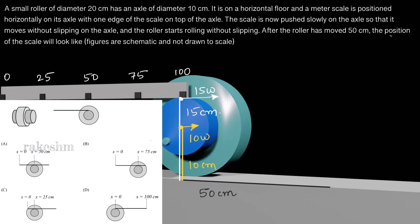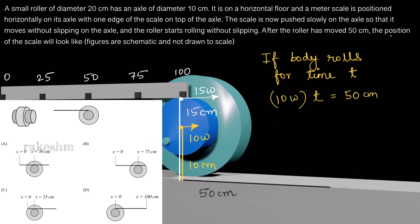If the angular velocity of the roller is ω, the velocity of the roller center is 10ω, and the velocity of the contact point on the axle top (where the scale rests) is 15ω. The roller moves 50 centimeters, so the center point satisfies: 10ω·t = 50 centimeters. Simplifying, ω·t = 5 radians.